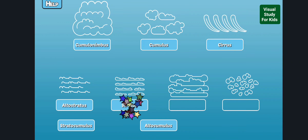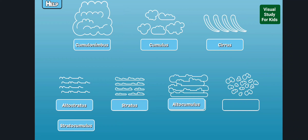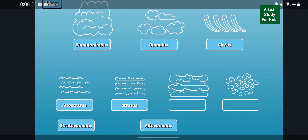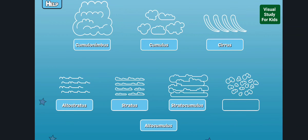Stratus clouds are low-level, flat, and usually cover much of the sky. They're gray in color and produce light rain. Altocumulus. Stratocumulus are low, puffy, gray clouds. They may produce a little rain.